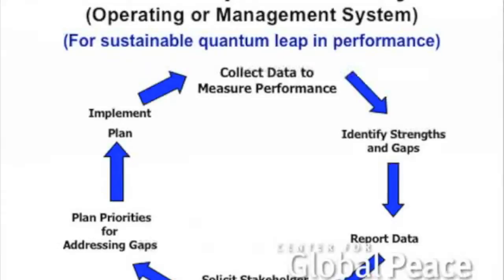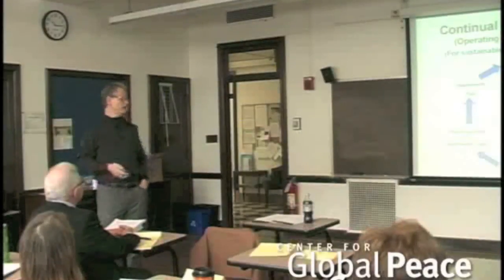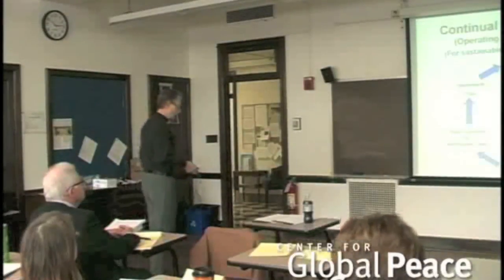We talked about the continual improvement process. A lot of operating systems and management systems are framed around this model. The old expression — plan, do, check, act — basically means: plan your priorities, implement the plan, collect and measure your progress data, identify strengths and gaps, report this data, solicit feedback from your stakeholders, then set new priorities and continue around this continual improvement cycle. Some management system standards say what we're after is continual improvement, though that isn't always necessarily the right framing.